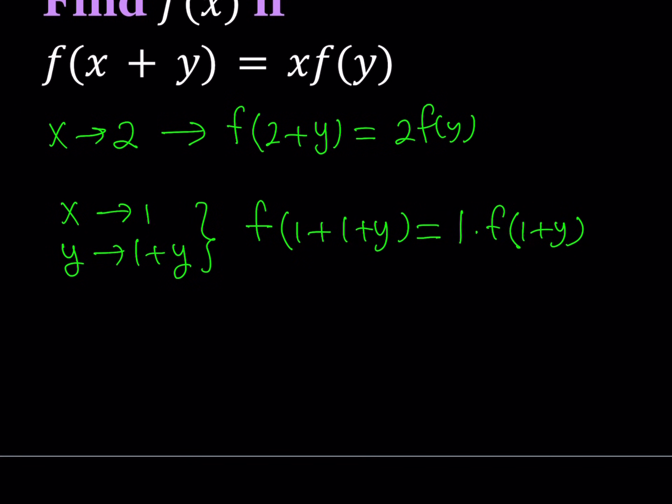So, this gives us something nice. F of 2 plus y equals f of 1 plus y. So, that's kind of like an interesting relationship because we're adding different things to y, but we're getting the same answer. So, does that mean f is a constant function? Is that linear? Is that something else? Let's find out.